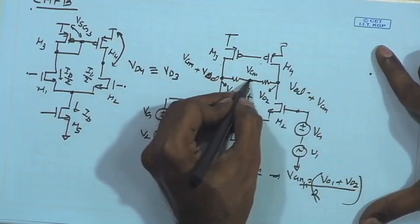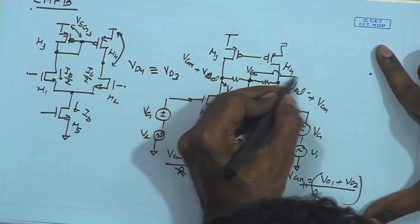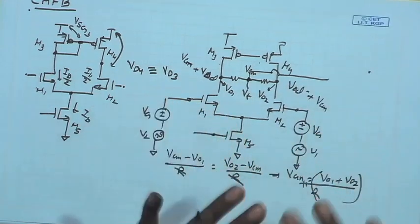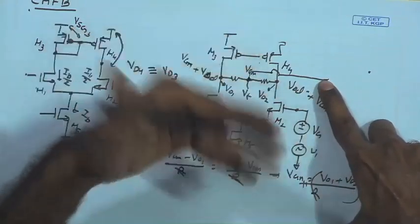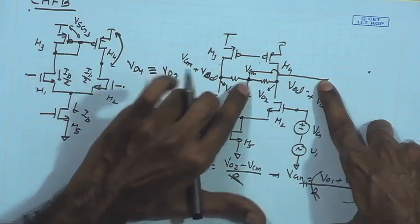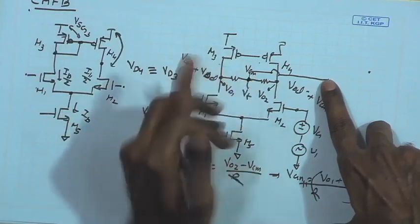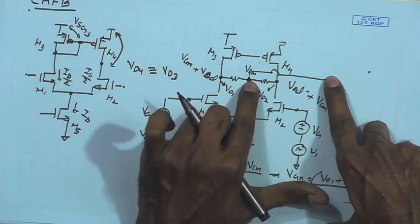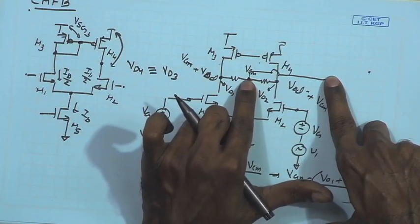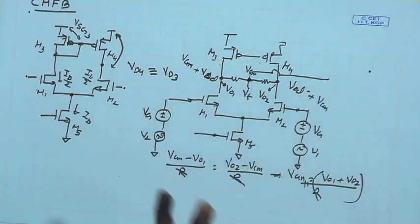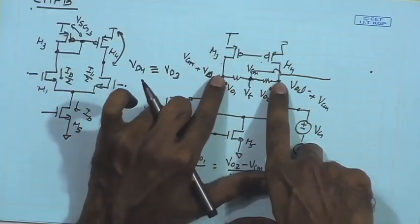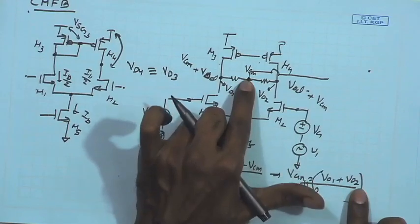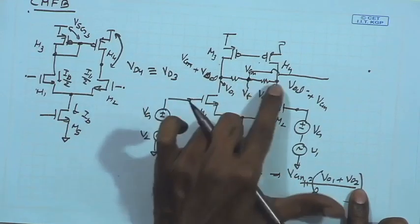We have extracted the common mode signal and want to fix it to a desired value. For simplicity, we assume we can filter out any common mode small signal, leaving only the common mode DC level. The differential signal's effect does not appear at this midpoint, so we obtain purely (V_o1 + V_o2)/2, which is the DC common mode level at the two outputs — and this is the DC bias point we want to set.